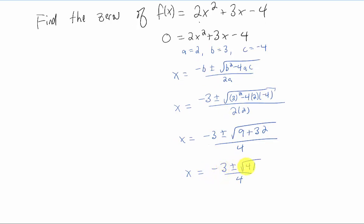Negative three plus the square root of 41 over four, and negative three minus the square root of 41 over four. If we plug these into our calculator, we get approximately 0.85 is one answer, and approximately negative 2.35 is our other answer.